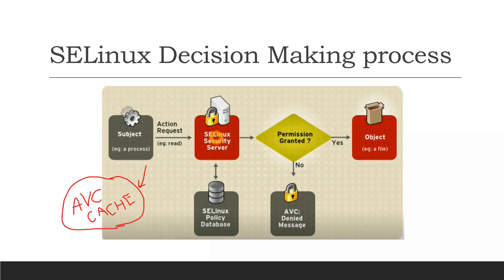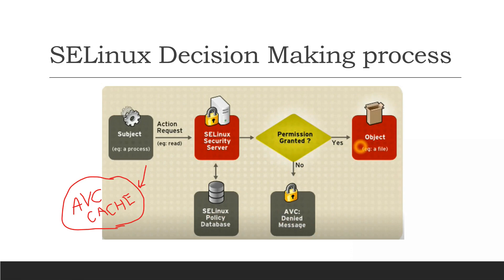The SELinux security server checks the security context of the app and file in the matrix. It contacts the SELinux policy database. If the rules or permissions are not available in the first step, it goes to the database where it can check if that permission is granted or denied. If there is no permission, the message 'avc: denied' is logged in the logcat and dmesg.